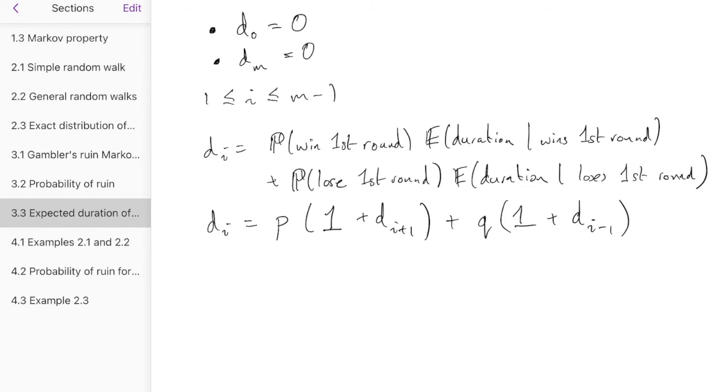You'll notice we have a p times 1 and a q times 1 there. And p plus q equals 1. So we can actually bring that 1 right out the front. Make it 1 plus pdi plus 1 plus qdi minus 1.